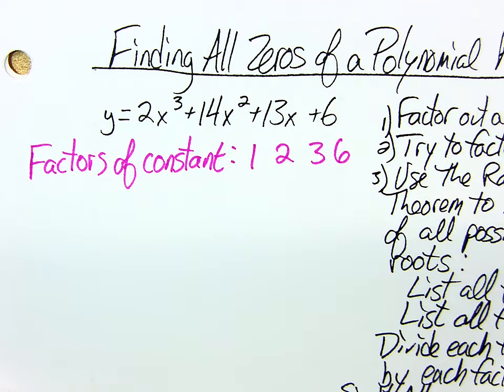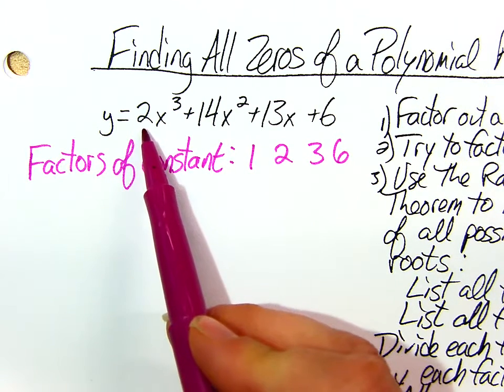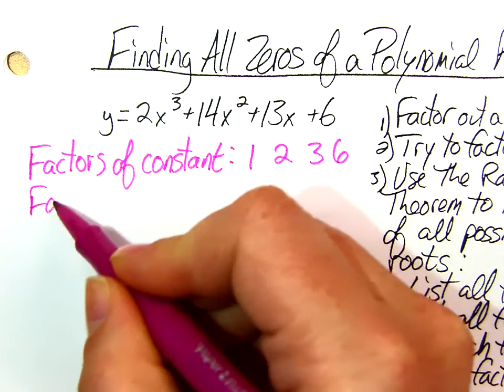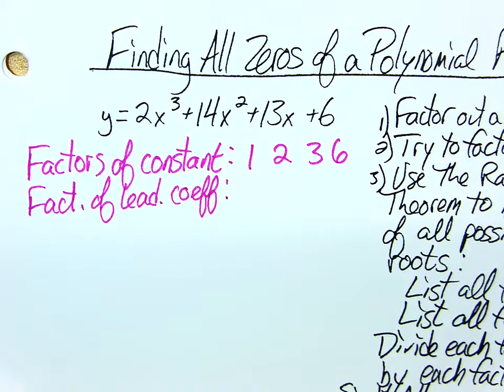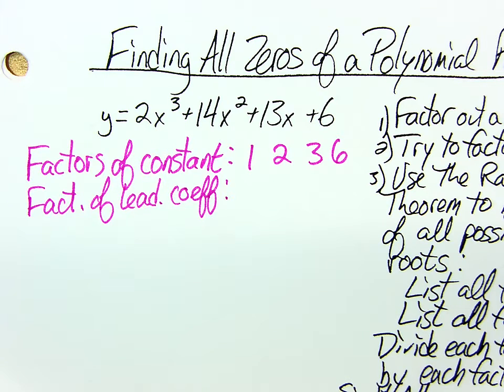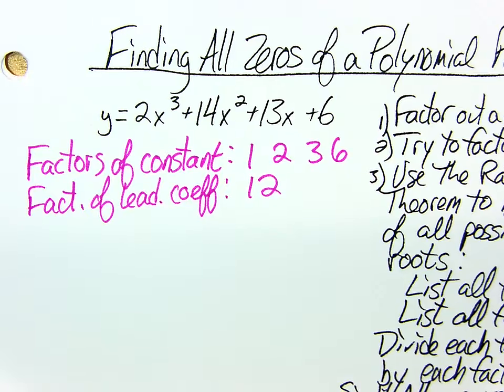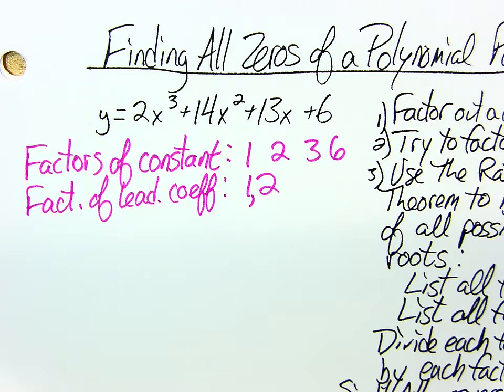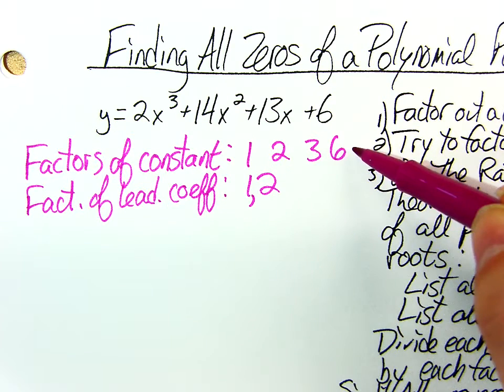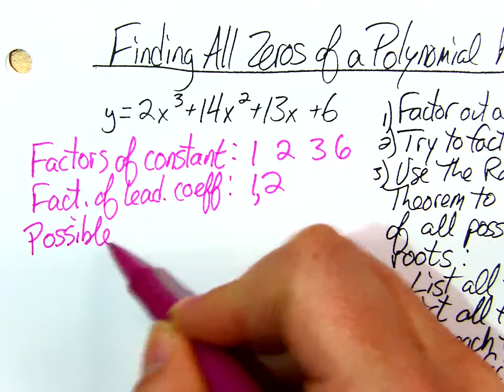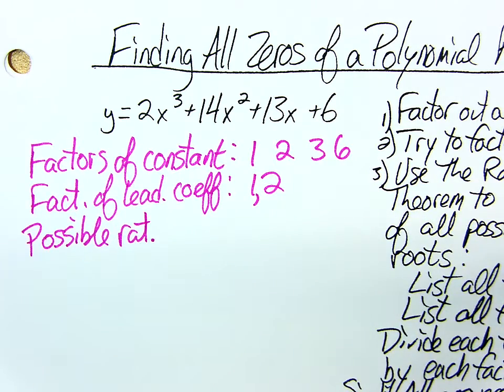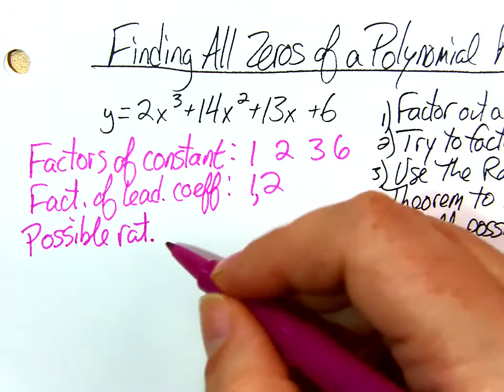Then I do the same thing, but I write down the factors of the leading coefficient, which is just your very first number as long as you're in standard form. So factors of the leading coefficient. In my case, the leading coefficient is 2, so the factors of 2 are 1 and 2. I should be using commas so it doesn't look like a 12.